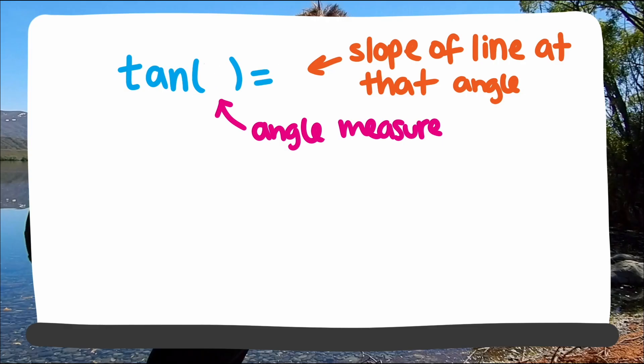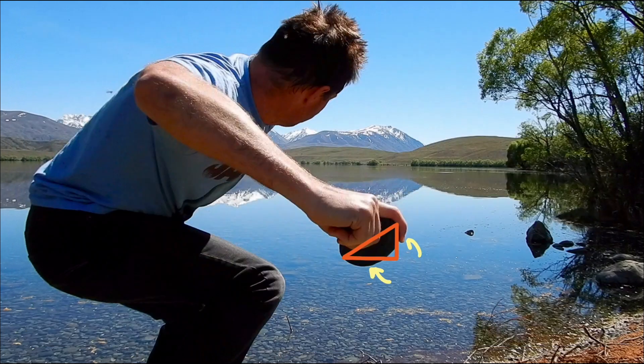The tangent of 20 degrees is about 0.364. That means the ratio of these two sides should be 0.364. Well, that's pretty close to the value of 0.33, so if we construct a right triangle with a height of one and a length of three, or legs of length one and three, then the narrow angle is going to be about 20 degrees.